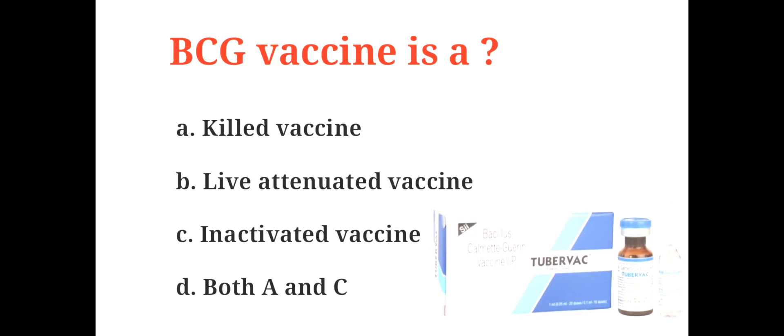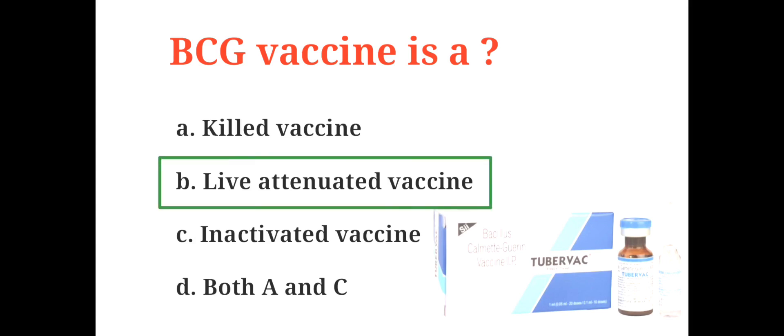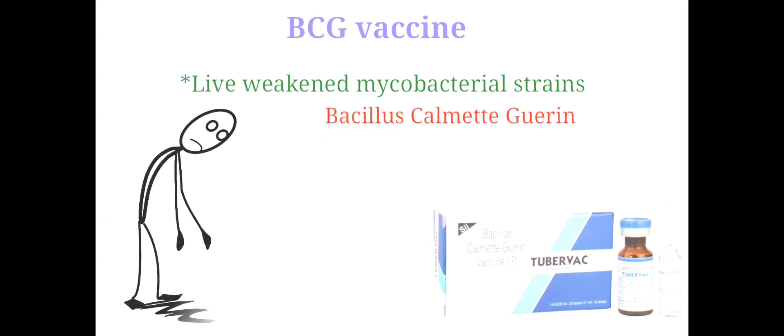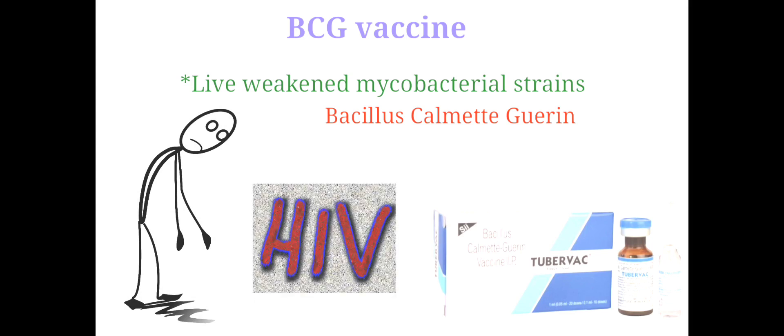BCG vaccine is a A. Killed vaccine, B. Live attenuated vaccine, C. Inactivated vaccine, D. Both A and C. And the correct answer is B. Live attenuated vaccine. All versions of BCG vaccine are based on live weakened mycobacterial strains, i.e., attenuated, descended from the original attenuated bacillus Calmette-Guérin. BCG vaccine is contraindicated for individuals with severely impaired immunity and individuals with HIV infection.